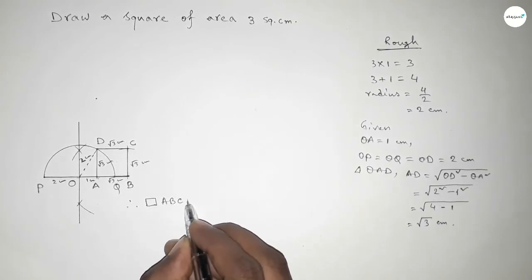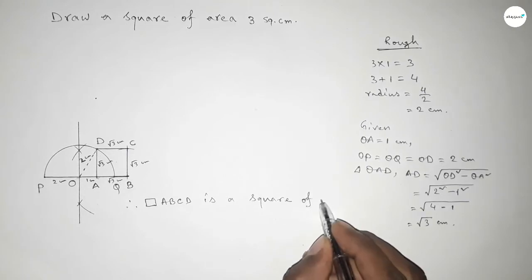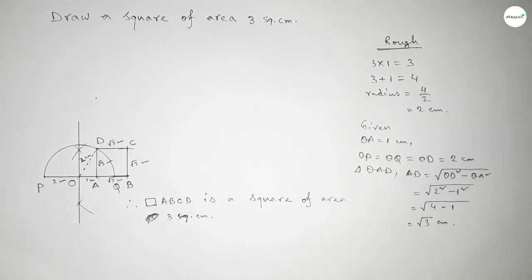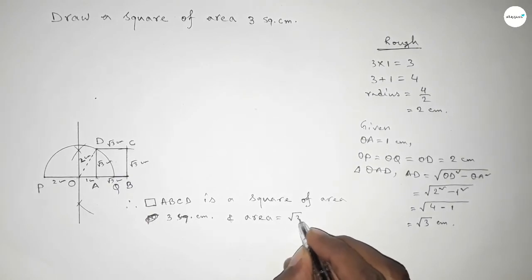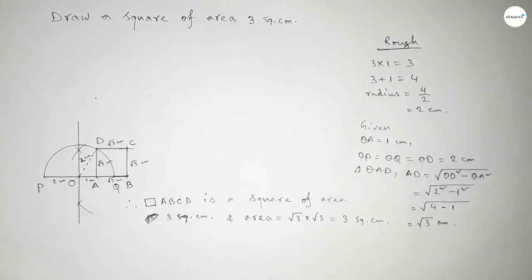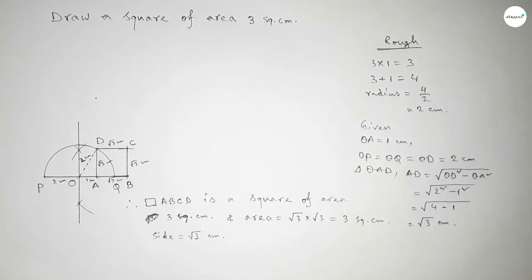Therefore rectangle ABCD is a square of area 3 square centimeters. Area equals each side squared, so √3 into √3 equals 3 square centimeters, where side equals √3 centimeters. That's all — thanks for watching! If this video is helpful to you, please share it with your friends.